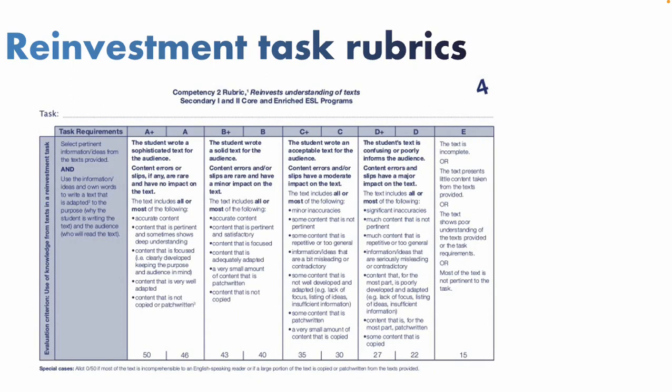For evidence of understanding, you can use a straightforward point system — one point for a true/false, fill-in-the-blank, or multiple choice question answered correctly, or two points for a short answer question. For reinvestment tasks, which are longer and more complicated, we recommend using an evaluation tool. The good news is the ministry has provided many evaluation rubrics you can use and adapt to whatever task you're using. There's one for secondary ESL and enriched programs, covering the kind of content students need to include and how they've adapted it.